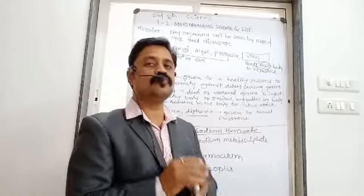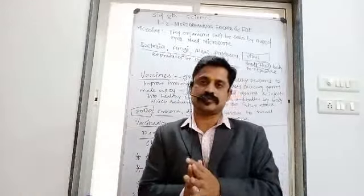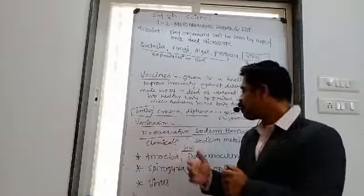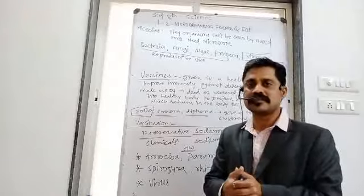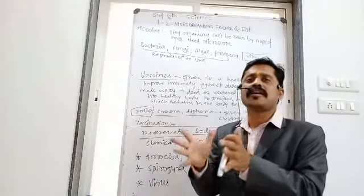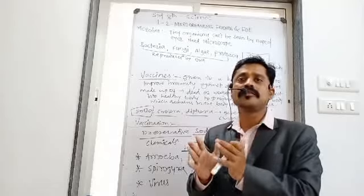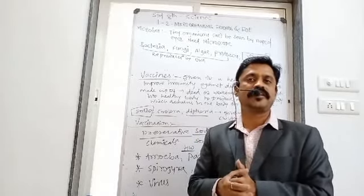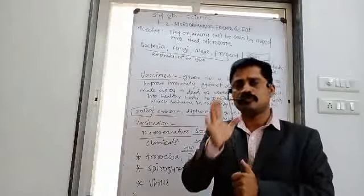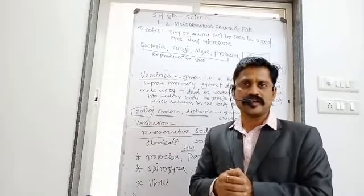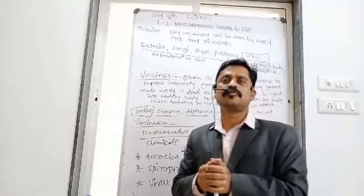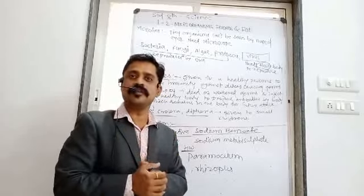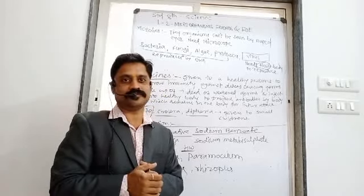For homework, you have to draw all the diagrams of this lesson — for example, Amoeba, Paramecium, Spirogyra, viruses, Rhizopus, and Mucor. Draw and label them in your regular notebook. We have completed this lesson. If you have any doubt, you can contact me anytime — I am ready to clear your doubts. Thank you.